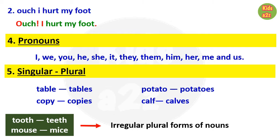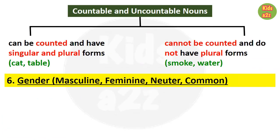Kids will also learn countable and uncountable nouns. Countable nouns can be counted and have singular and plural forms, like 'cat' and 'table.' Uncountable nouns cannot be counted and do not have plural forms, like 'smoke' or 'water.'